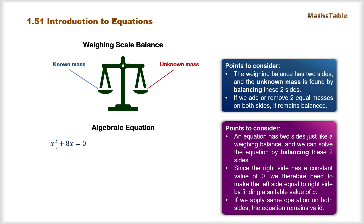How can we make the two sides of the equation equal? We can either make the right hand side equal to the left side, or the left side equal to the right hand side. Here, the right side has only a constant, which is 0. Since all constants have a fixed value, we cannot change the right hand side. So instead, on the left hand side we have variable terms x² and 8x, where x is a variable that can take any real value. We can substitute values of x to check whether the left hand side becomes equal to 0.